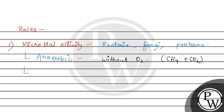अब हम discuss करते हैं about aerobic treatment, जैसे कि होता है in the activated sludge system. यहाँ पे microbes oxygen use करते हैं to break down the organic pollutants, and convert करते हैं उनको in water, carbon dioxide and additional microbial biomass.